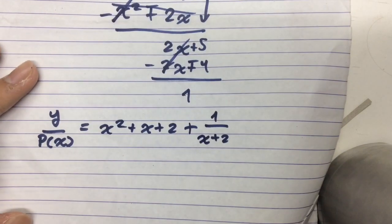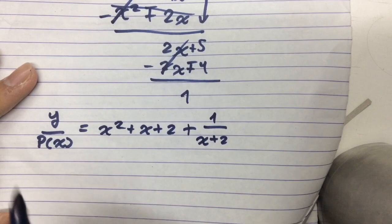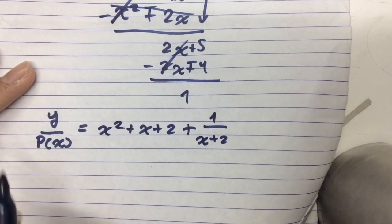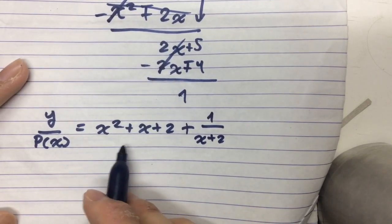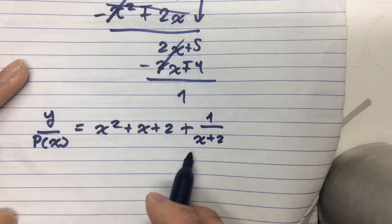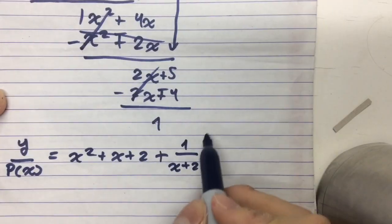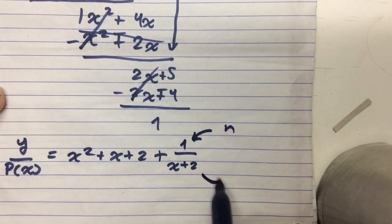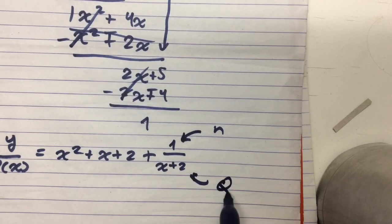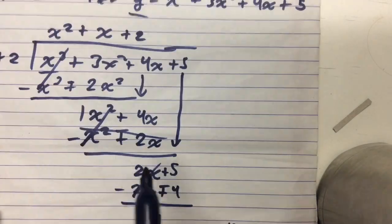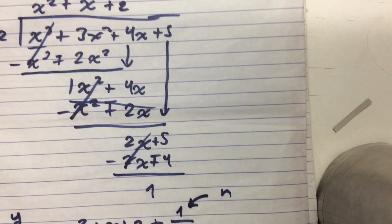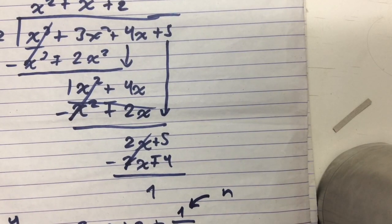So the final answer here would be function y divided by p(x) equals x squared plus x plus 2 plus 1 over x plus 2. Wherein 1 over here is the remainder, and x plus 2 is the divisor. And so that is how you divide polynomials.